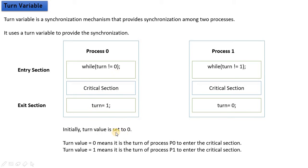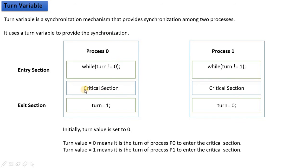Initially, the turn value is 0. So first of all, Process 0 will be executed. Process 0 will arrive and the instructions will be executed. The while loop checks: while turn is not equal to 0. When turn value is initially 0, this while loop will break, and Process 0 will enter the critical section.